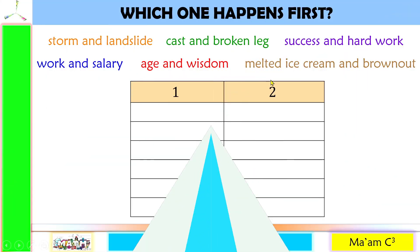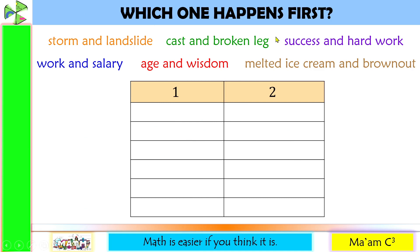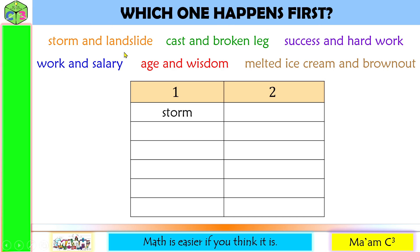Let's have an activity: Which one happens first? I have here bivariate data. A bivariate data has two variables — one independent and one dependent. We are going to identify which happens first. Those things that happen first go in column 1, and those that happen next go in column 2. The first one is storm and landslide. The storm happens first, and then afterwards there might be a landslide.